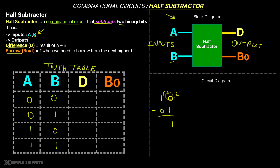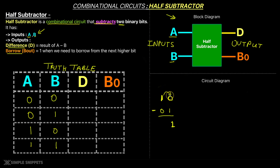Whenever there is a borrow, the neighboring digit becomes 2. That is its actual value, although in the binary number system we only have 0 and 1 — you won't visibly see 2. But its actual value is 2 because it is carried from a digit with a higher positional value: the positional weight of that digit is 2 raised to 1, versus 2 raised to 0 for the digit to its right. So when you carry forward, this becomes 2, and then 2 minus 1 gives the output as 1. That digit then becomes 0, and 0 minus 0 gives 0, which is the result of the subtraction.